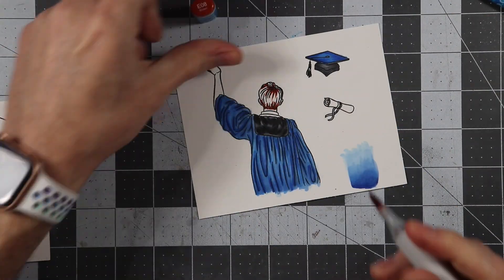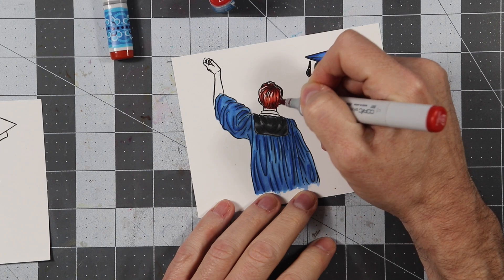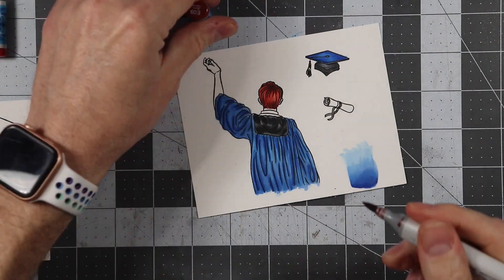And then for the hair, I decided to go with a reddish brown here. So I'm going to go ahead and do the exact same thing—darker to light, light to dark.